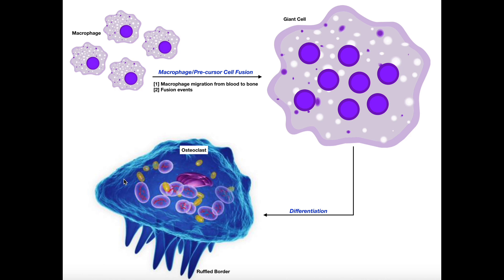When we look at an osteoclast, it looks almost like a jellyfish — the upper part contains all the cytoplasm and nuclei. Looking at the bottom, those little tentacle-like projections are called the ruffled border, a very common term when discussing osteoclasts. These projections move over the surface of the bone, and the secretions released from the ruffled border are what actually degrade the bone tissue.